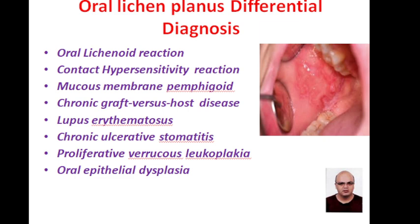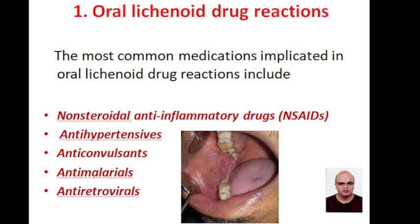Oral lichen planus resembles several conditions including oral lichenoid reaction, contact hypersensitivity reaction, mucous membrane pemphigoid, graft-versus-host disease, lupus erythematosus, ulcerative stomatitis, proliferative verrucous leukoplakia, and oral epithelial dysplasia.